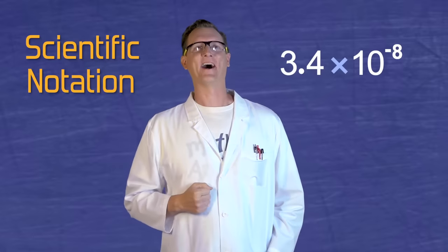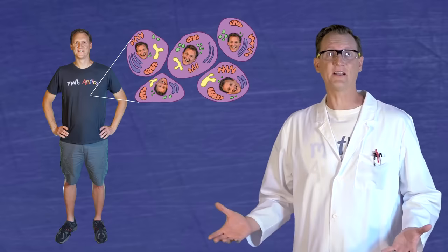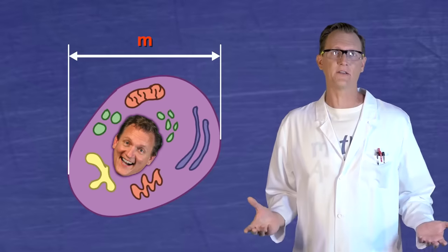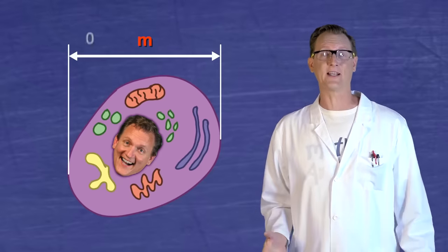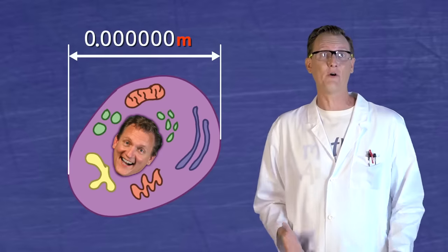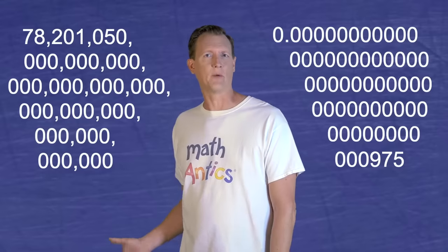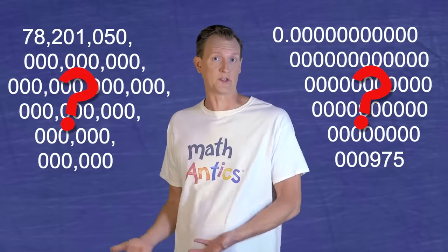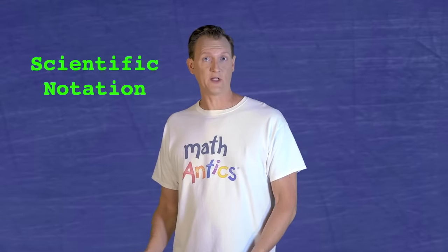Scientific notation. Numbers can be really big or really small, right? Like, if you wanted to count up all of the cells that make up your body, it would be a really big number, something like 35 trillion cells. But if you wanted to measure the diameter of one of those cells using meters, you'd get a really small number, something like 0.00000005 meters. Not only are really big or small numbers a lot of work to write down because of all the zeros, they're hard to quickly evaluate and compare. At a glance, it's not easy to tell just how many number places there are in these really big or small numbers. And that's where scientific notation can really help us out.